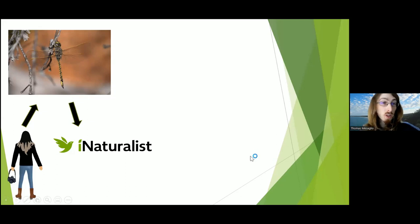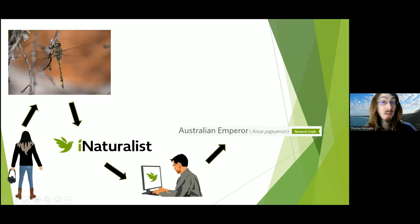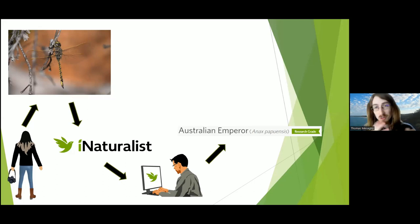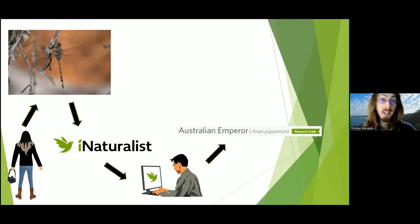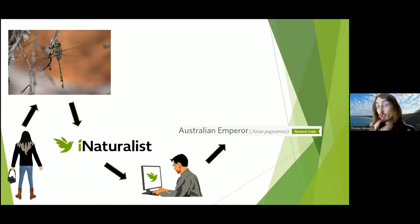Once you've uploaded your photo or sound recording, you get to the most exciting part: identification. If you know what you observed, you can add an identification yourself and others can confirm it. But if you have no idea — say you've seen some kind of insect but don't know what — this is where the power of the iNaturalist community comes in. It's a global community with researchers, museum curators, and world experts across every group of organisms who can help with identifications. You can also contribute identifications yourself without uploading observations.